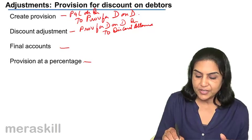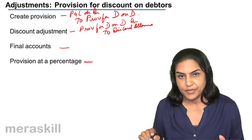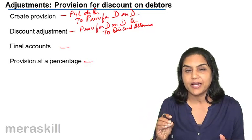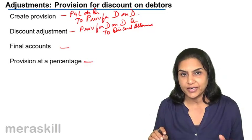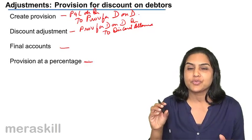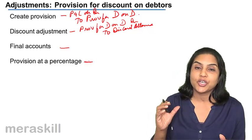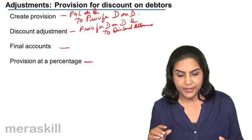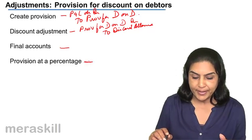When the provision is taken on debtors at a percentage, as discussed before, it is taken on the net debtors — the final balance after deducting bad debts and provision for doubtful debts. This is because when there are doubtful debts, debts which are in doubt are not going to avail of the cash discount facility. They are old debts, and discount will not be availed of by them.